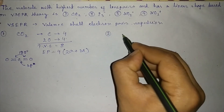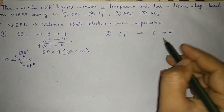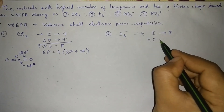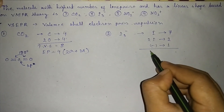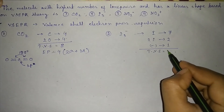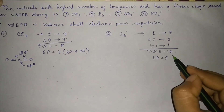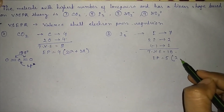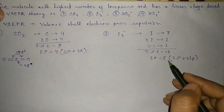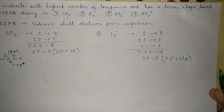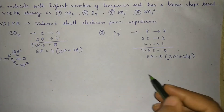In the case of I₃⁻, the central iodine has seven valence electrons. The other two iodines contribute two electrons, and the negative charge adds one more, giving a total of ten electrons — that is five electron pairs. We have two sigma bonds plus three lone pairs, so the hybridization is sp³d.